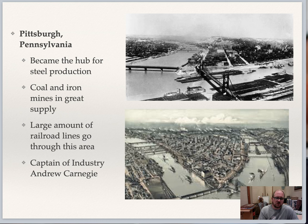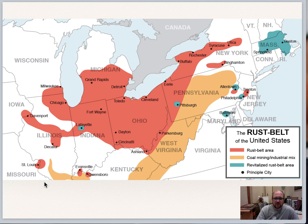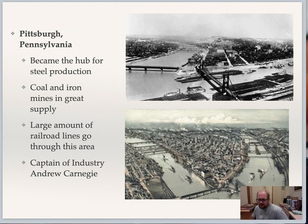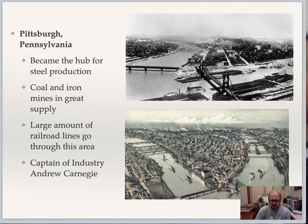Pittsburgh's advantages include proximity to coal and iron supplies, its location at the crux of two different rivers, and its position on the map — right between the Midwest cities of Chicago, Cincinnati, Cleveland, and Detroit, and the East Coast cities of Philadelphia, Boston, and New York. So it's a nice halfway point with a lot of rail lines linking up. The person who will make Pittsburgh's steel industry as large and strong as possible is Andrew Carnegie, who will push steel production and create one of the first monopolies in American history.